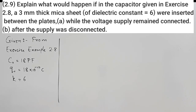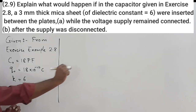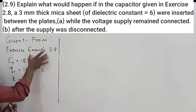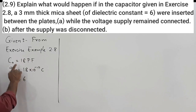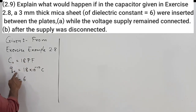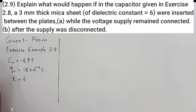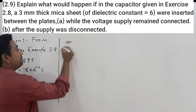Exercise 2.9: explain what would happen if the capacitor given in Exercise 2.8 — a 3mm thick mica with dielectric constant 6 — were inserted between the plates. First, while the voltage supply remains connected. Second, after the supply was disconnected. From Exercise 2.8, we know: capacitance is 18 picofarad, initial charge is 18×10⁻¹⁰ coulomb, and dielectric constant k is 6.